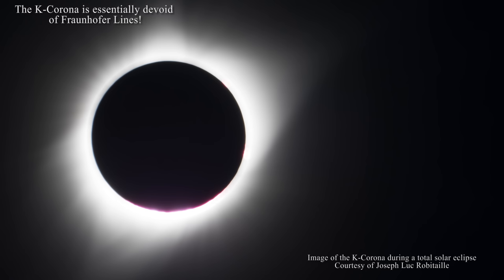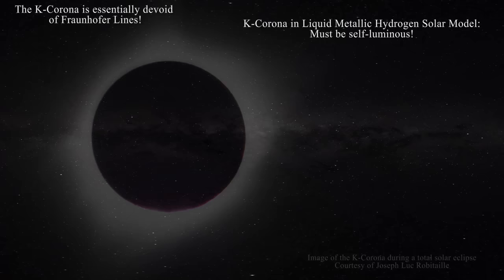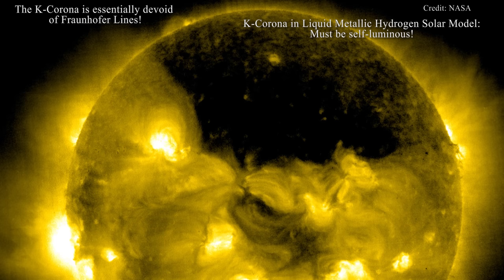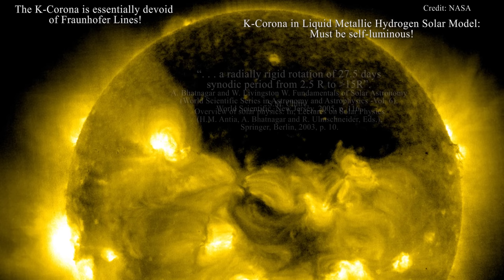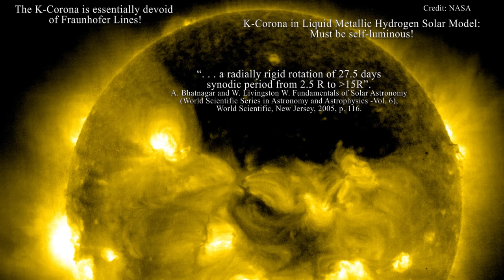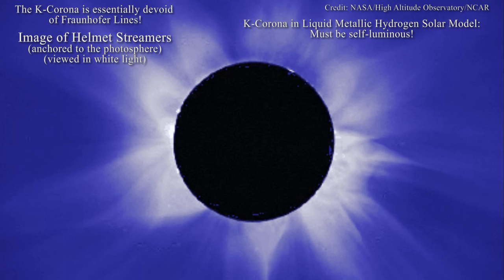The continuous spectrum of the k-corona simply does not represent scattered light — this region must in fact be self-luminous. The solar corona is anchored to the photosphere: when the Sun is quiet, coronal holes are anchored onto the polar regions. This anchoring constitutes a powerful sign that the Sun is comprised of condensed matter, since this behavior directly implies both long-term structure within the corona and the existence of a true solar surface. Furthermore, the corona possesses a radially rigid rotation of 27.5 days synodic period from 2.5R to greater than 15R as established by solar satellite data, strongly supporting the idea that the solar body and corona possess condensed matter.